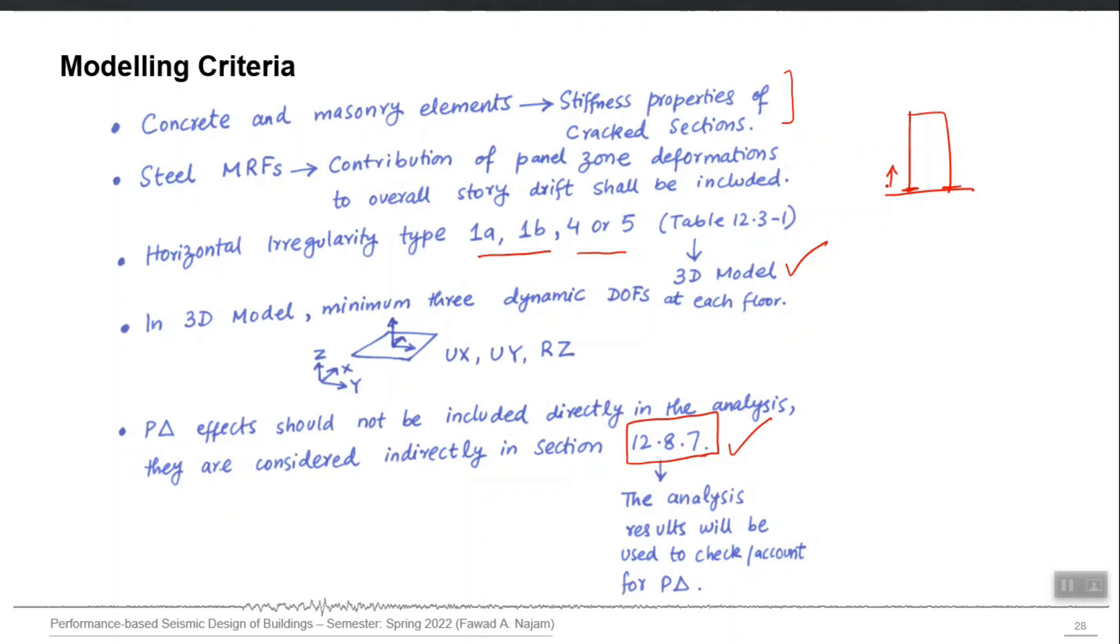It is mostly the decision of designer whether he wants to include the vertical time history analysis or not. If you have a conventional structure which has an adequate factor of safety in the gravity load, then you may not go for that option, vertical time history analysis.